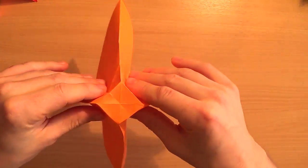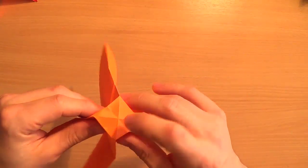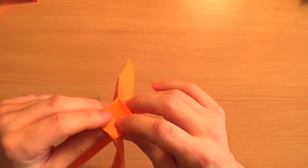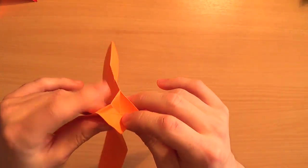So pinch all four of these lines to make them mountain folds. Like that. And then hold it as if you're converting the water bomb base. Push that down. Take your time on this bit, because this bit's fiddly.